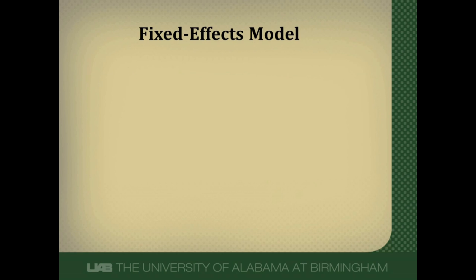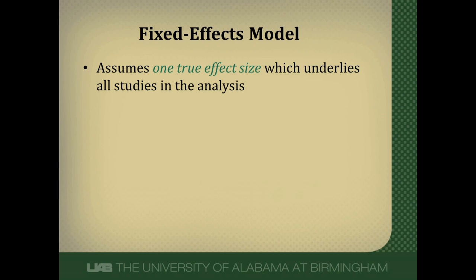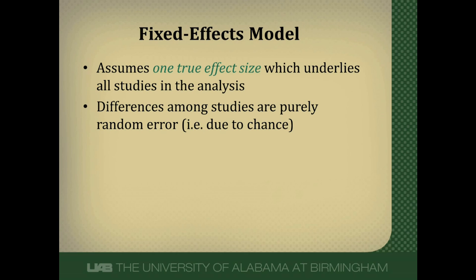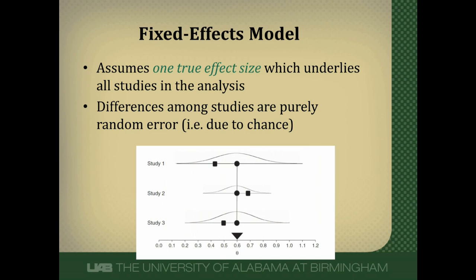Let's look at each of these models individually and see how they're different. Fixed effects models assume there's one true effect size, a fixed effect, which underlies all studies included in the meta-analysis. Any differences among studies are purely due to random sampling error, due to chance. Graphically, the fixed effect is represented by this circle, and the squares represent the findings of each individual study. You can see they differ a little bit from the true effect. These differences are purely due to chance, due to sampling error, shown by these distributions. This wider distribution represents a smaller study, while study two is a much bigger study, so it has a narrower distribution of errors.